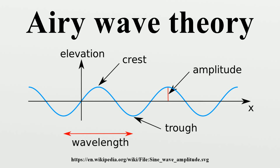This linear theory is often used to get a quick and rough estimate of wave characteristics and their effects. This approximation is accurate for small ratios of the wave height to water depth, and wave height to wavelength.